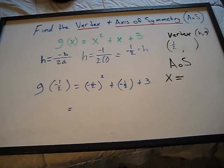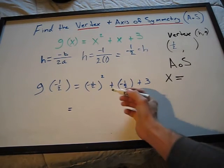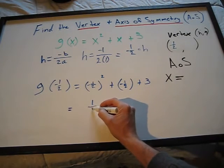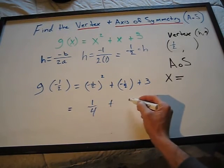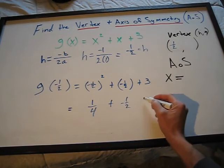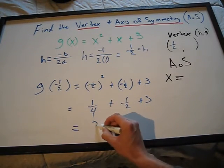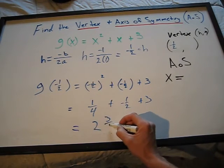And then we'll go through our order of operations. Negative 1 half squared is 1 quarter plus negative 1 half plus 3. We'll simplify. We end up with 2 and 3 quarters.